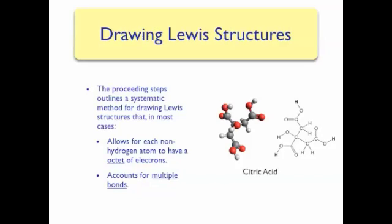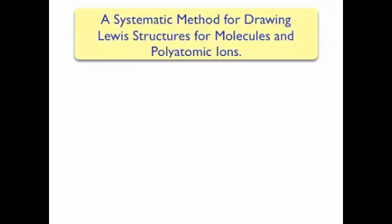This is one of many methods for determining Lewis structures; you may use any method that you feel comfortable with. This systematic method will work for drawing Lewis structures for neutral molecules as well as polyatomic ions, which are simply molecules that carry a net charge because they are missing or have extra electrons.